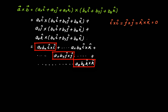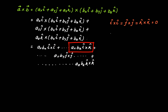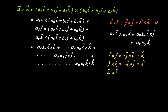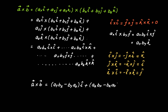For cross products between different unit vectors, such as i×j, you get a result perpendicular to both. For example, Ax i × By j equals AxBy (i×j) equals AxBy k. The rules are: i×j = k, j×k = i, k×i = j, and their reverses are negative. Finally, A cross B equals (AyBz − ByAz) i + (AzBx − BzAx) j + (AxBy − BxAy) k.